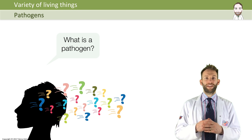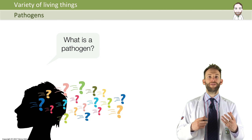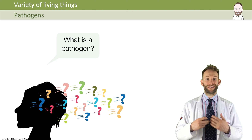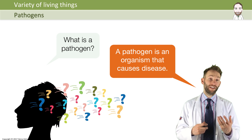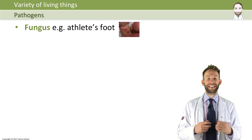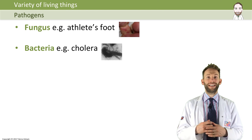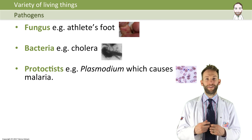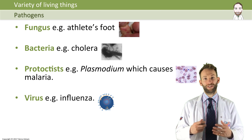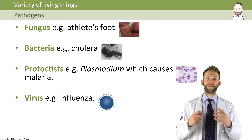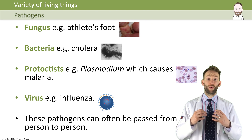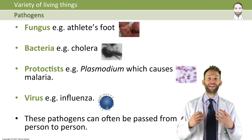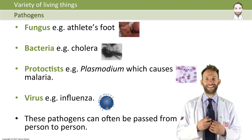Another thing to talk about in this topic is pathogens. A pathogen is any organism that causes a disease. It could be a fungus, like athlete's foot; a bacteria, like cholera; a protoctist, like plasmodium, which is the organism that causes malaria; or a virus, such as influenza. Because pathogens are living organisms, they can be passed on from person to person, organism to organism — they are the things that usually cause infectious disease.